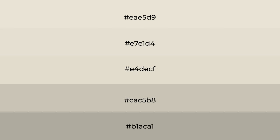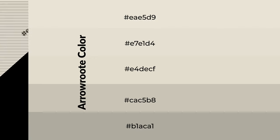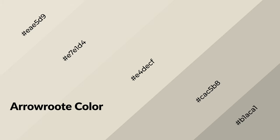To generate shades of a color, we add black to the color, and it is used in patterns and 3D effects. Layers and shades create depth and drama. Arrowroot is a warm color and it emits cozier and active emotions.